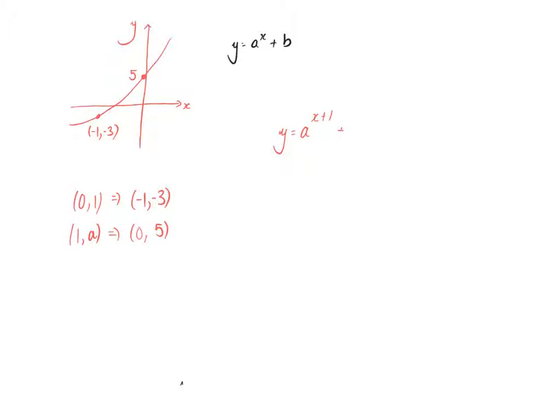And then the graph has been moved. It should have been at 1, and it's now at -3. So it has been moved 4 places, and it's been moved down, so it's not plus 4, but it is minus 4.